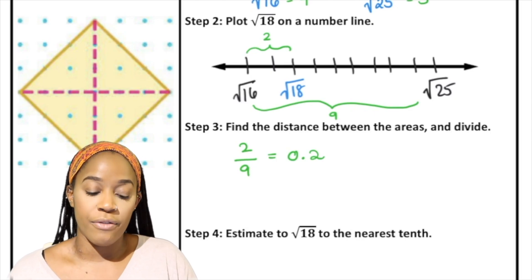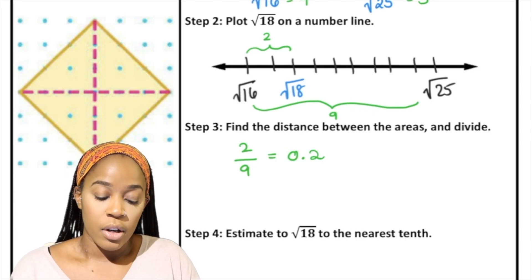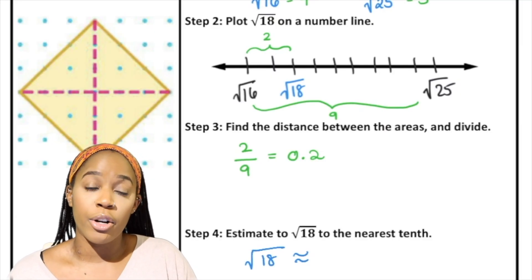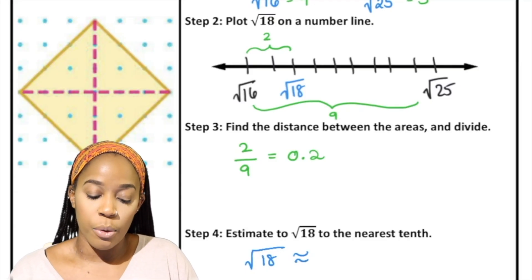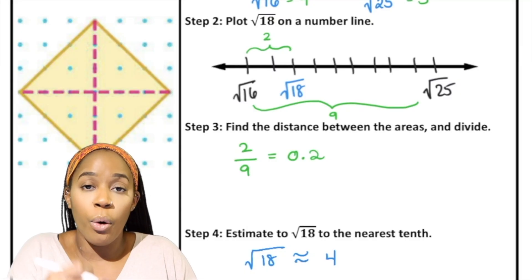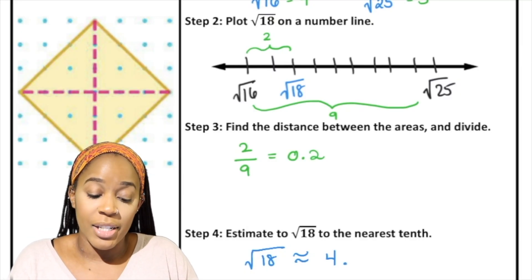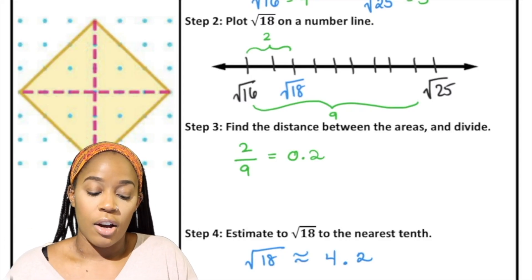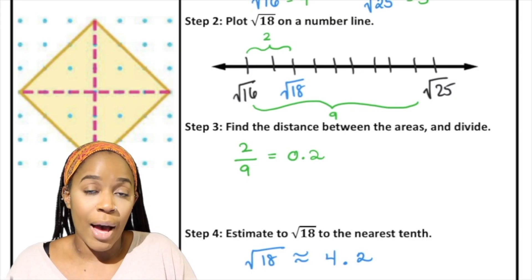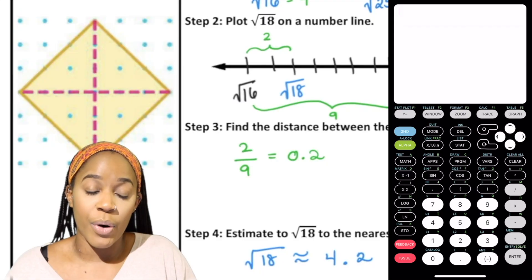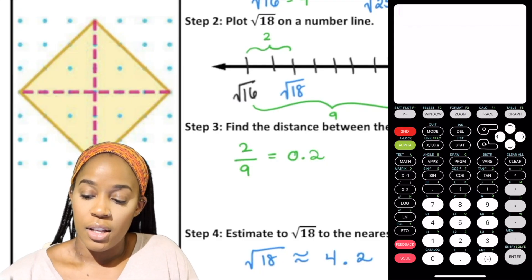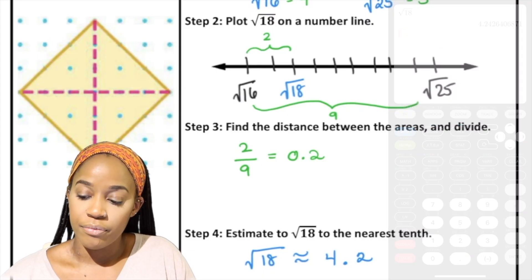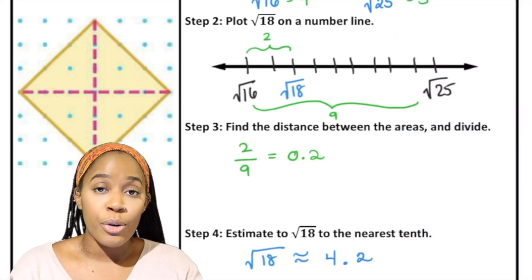Now that I found that, I'm going to put all this information together. If I'm estimating the square root of 18, I know it's somewhere between 4 and 5 — greater than 4 but less than 5 — so my whole number is going to be 4. My decimal is going to be what we found in step 3, which was the distance between those areas divided. So our estimate is that the square root of 18 is about 4.2. If you plug that into your calculator you'll see the square root of 18 is 4.24, which rounded to the nearest tenth gives us 4.2 — our estimate was spot on.